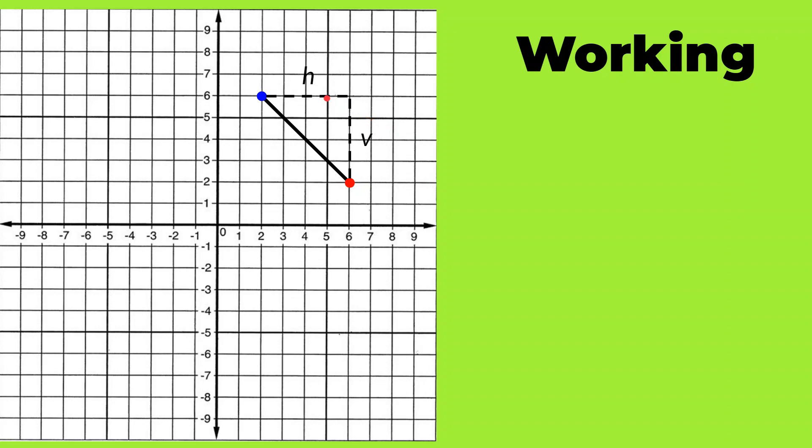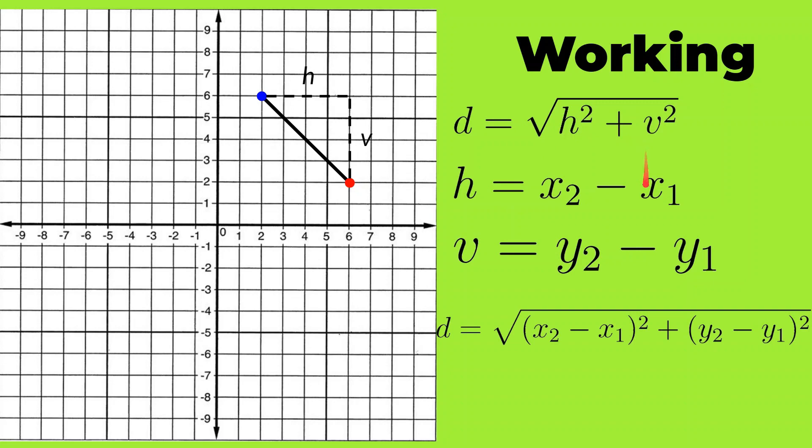Since this is a right triangle, we will apply the Pythagoras theorem to find this distance. So d is equal to the square root of h squared plus v squared. But just now we have seen that h is equal to the difference between their x coordinates, that is x2 minus x1, and similarly v is equal to y2 minus y1. So we will simply plug in these two values to form our final formula, which is the same one which we have been using. Therefore, this formula can work for any two points on the graph.